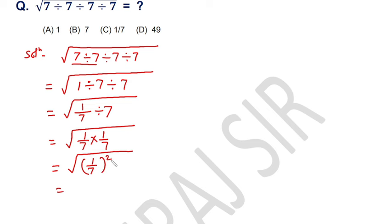Now this square and radical sign cancel each other, then we will get 1 over 7. The answer is option C.